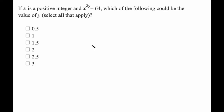Here's a good GRE quant problem. If x is a positive integer and x to the power of 2y is equal to 64, which of the following could be the value of y? We're going to select all that apply. The best way to do this is to plug these answer options in for y, and if we solve for x and x turns out to be a positive integer, then we know that that particular value works.